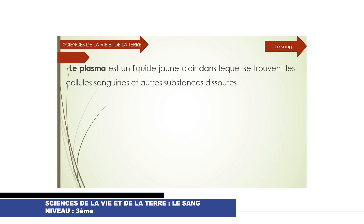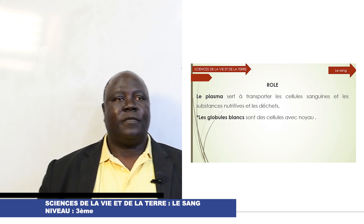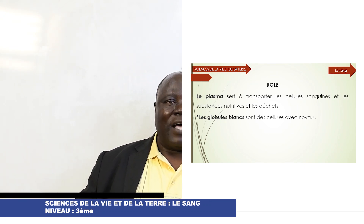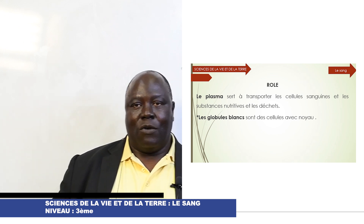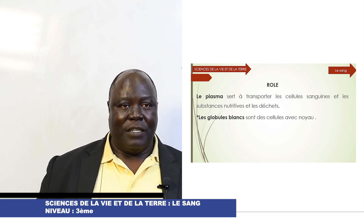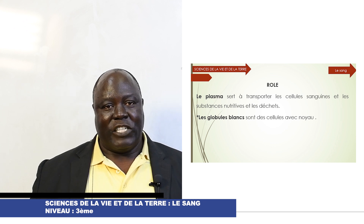Le plasma, c'est quoi ? C'est un liquide jaune clair dans lequel se trouvent les cellules sanguines, c'est-à-dire les globules rouges et les globules blancs, et autres substances dissoutes. Quel est son rôle ? Le plasma sert à transporter les cellules sanguines, les substances nutritives et les déchets.